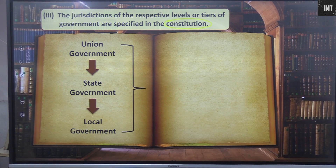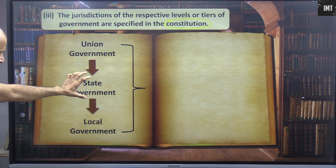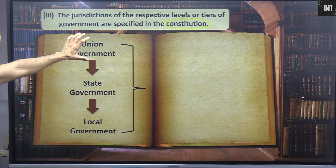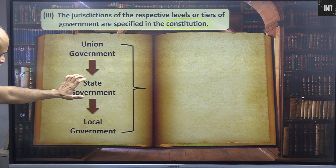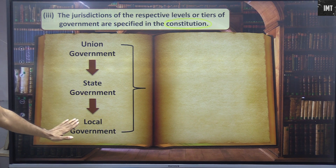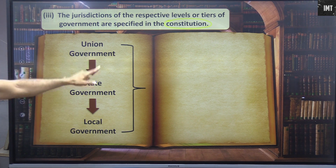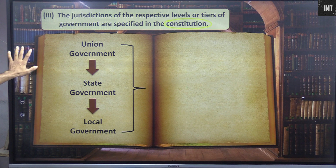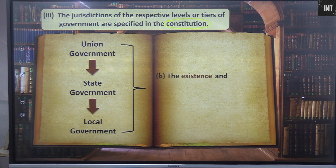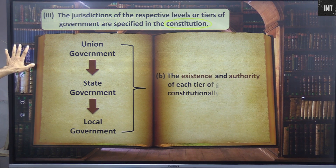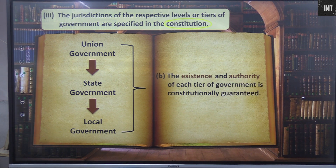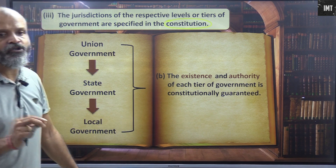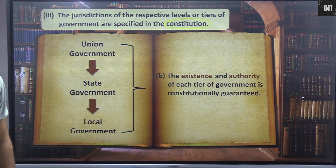There are three tiers of government: union government, state government, and local government. These are the three stages of government. The existence and authority of each tier of government is constitutionally guaranteed.